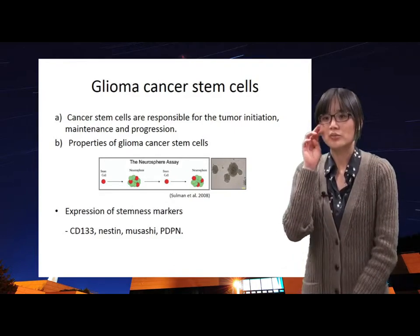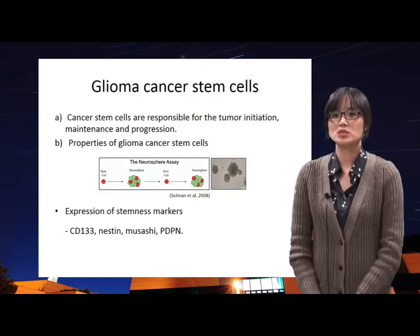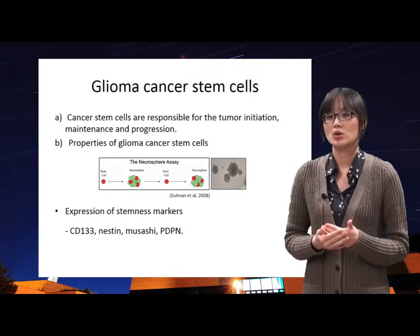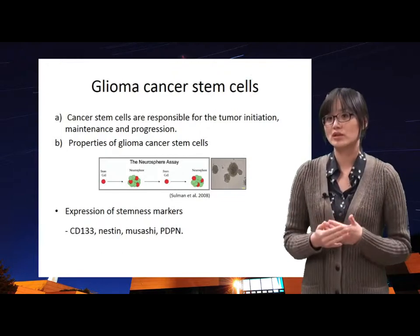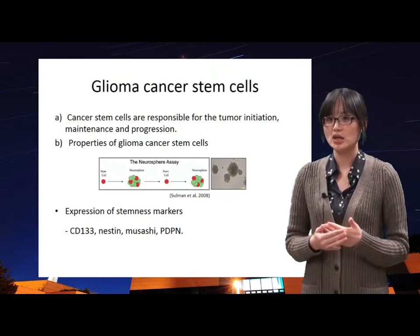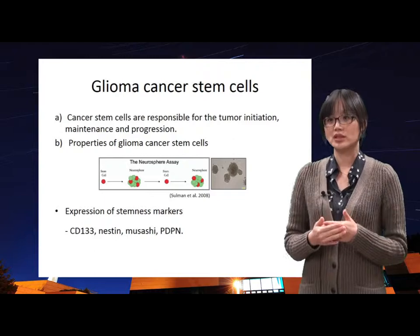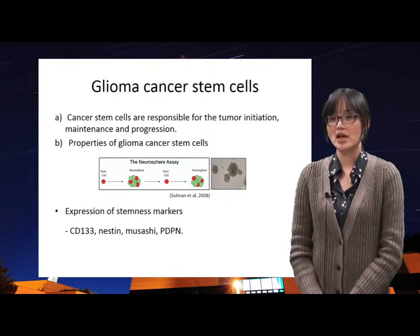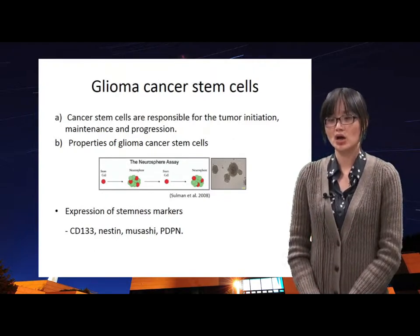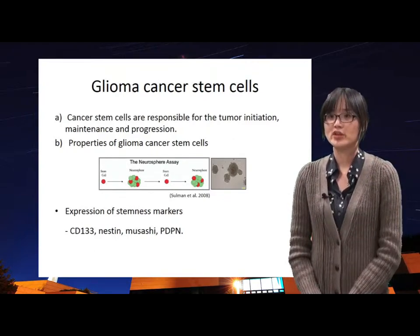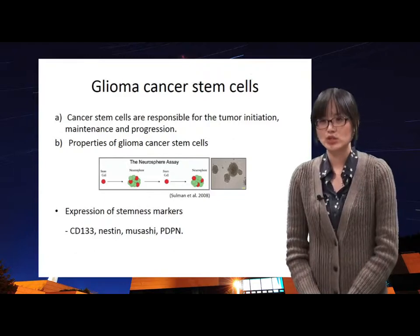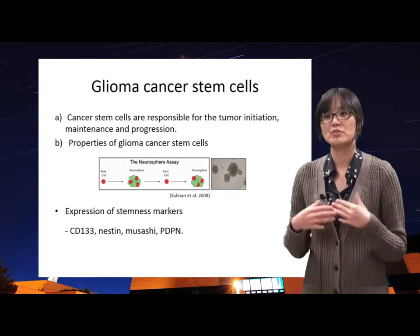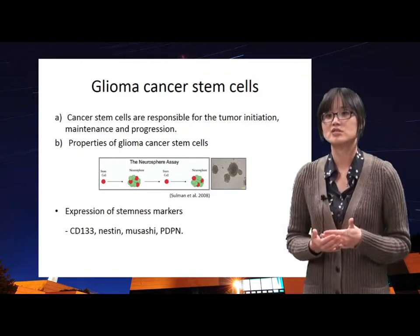The main difference of stem cells isolated in leukemia or glioblastoma is the marker on the surface of cancer cells, because leukemia has specific markers on their surface, whereas solid tumors do not have any specific markers on their surface.